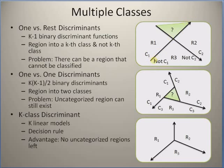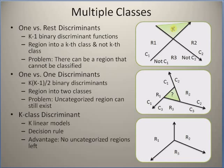If you plug a vector into this discriminant function g(x) and get a positive value, you classify it as c1; a negative value means not c1. However, this type of classification results in a major problem: you can have regions where a sample vector could belong to both c1 and c2, creating an ambiguous region where samples cannot be classified accurately.